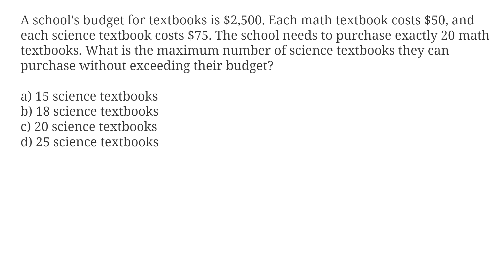A school's budget for textbooks is $2,500. Each math textbook costs $50 and each science textbook costs $75. The school needs to purchase exactly 20 math textbooks. What is the maximum number of science textbooks they can purchase without exceeding their budget? A. 15 science textbooks. B. 18 science textbooks. C. 20 science textbooks. D. 25 science textbooks.